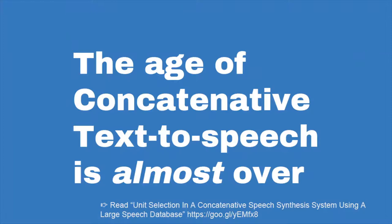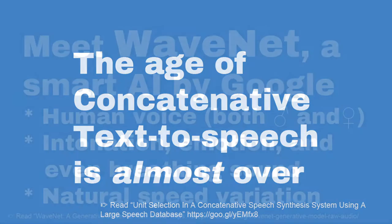Concatenative TTS basically creates a large database of speech fragments recorded from a single speaker and then combines those fragments to make words, so it sounds like a human voice. But the problem with those tools is they won't contain any kind of emotion — you won't be able to have intonation in that kind of text-to-speech.